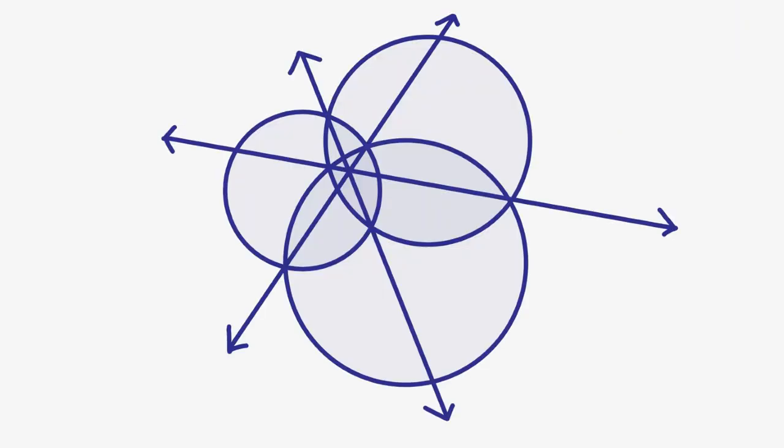As seen earlier, the radical center can also be used as an easy way to prove concurrency, especially whenever you see intersecting circles or cyclic quads sharing sides.